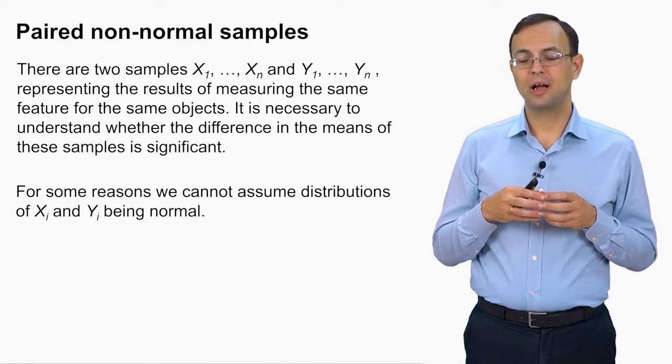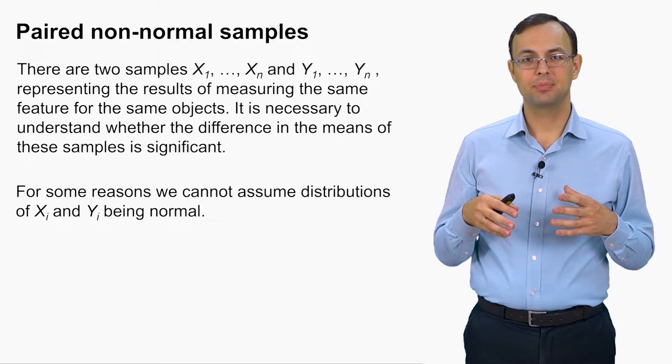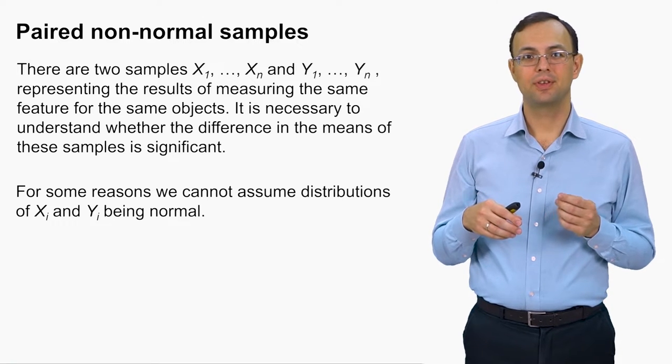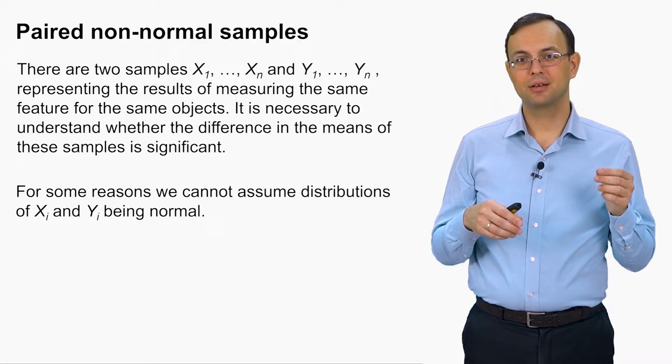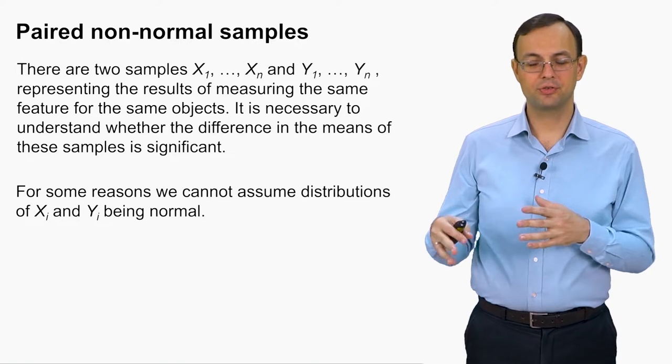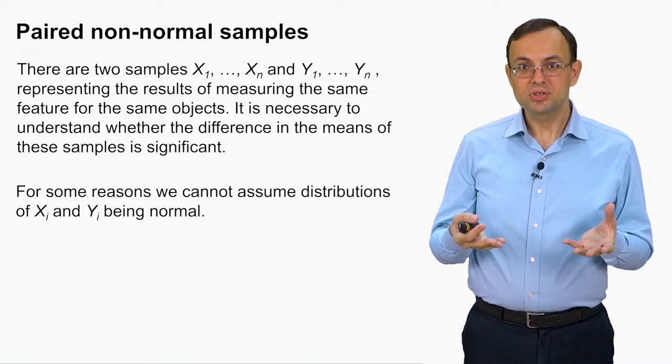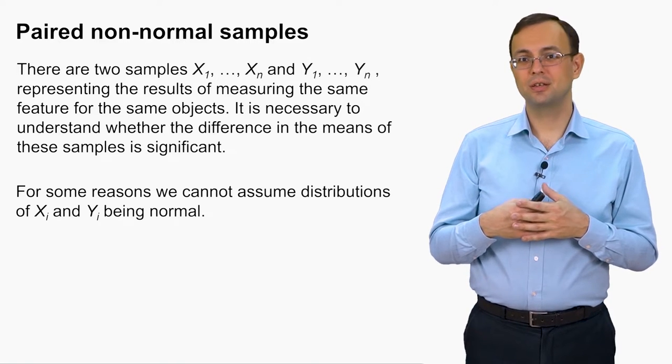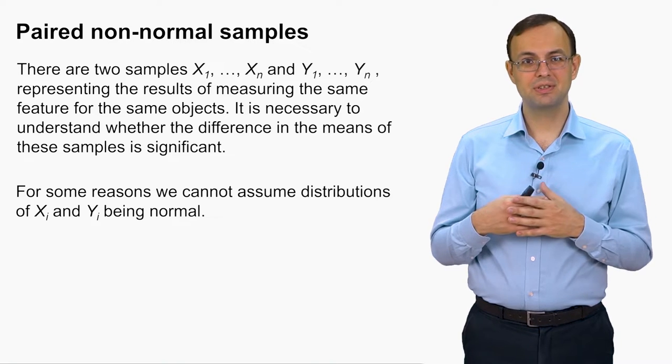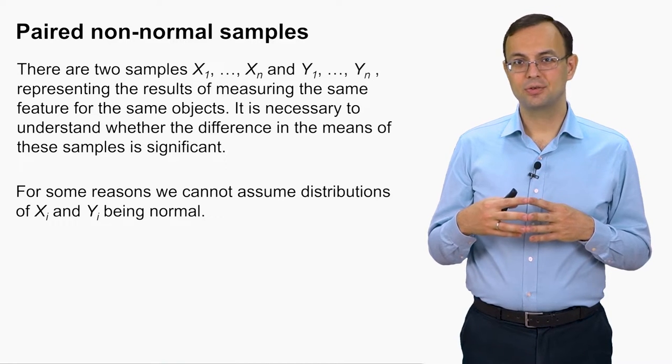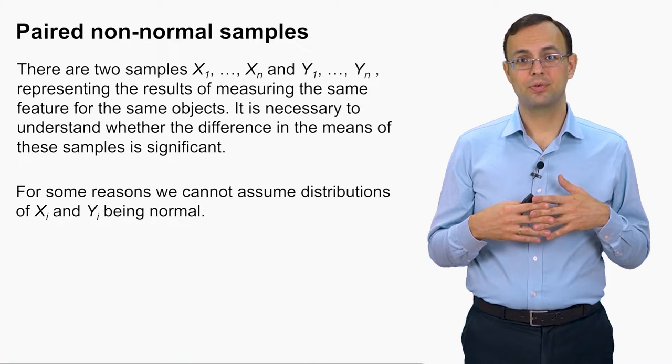After this you get not 173.5 but 1735 centimeters. So because of this error, the height of someone turns to be just 17 meters. And so this is a typical example of an outlier.